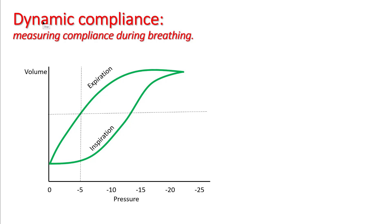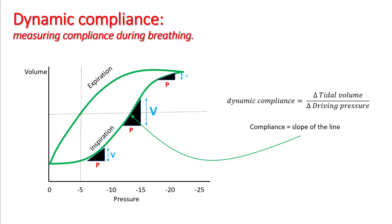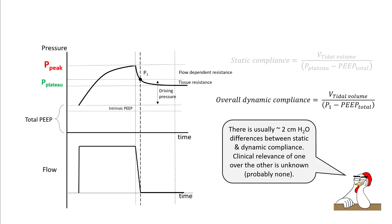From the pressure-volume loop, compliance is not the same throughout the inspiratory cycle and differs during expiration as well. Dynamic compliance gives you the change in tidal volume divided by the change in driving pressure at any point on this curve, represented by the slope of the line at that point. The top and bottom of this curve are very stiff, while the most compliant area is right in the center.